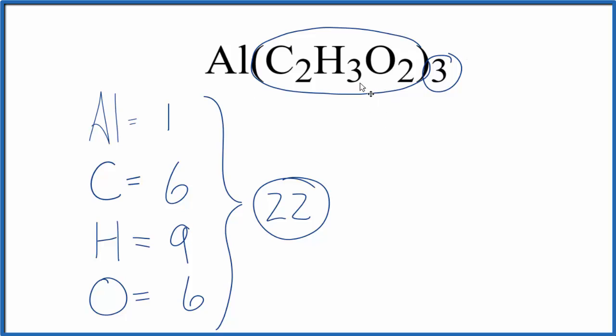So that's how you find the number of atoms for aluminum acetate. We have one aluminum, six carbon atoms, nine hydrogen, and six oxygen atoms for a total of 22 atoms in aluminum acetate.